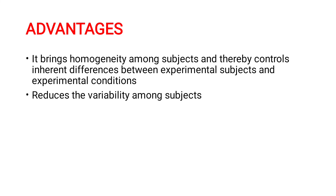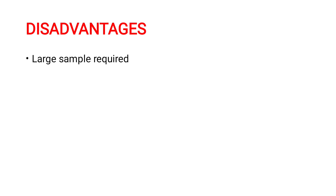For example, in Block 1 with only hypertension patients, you can clearly state the effect of a particular drug. For patients with diabetes and hypertension in Block 2, the same drug may have a different effect, allowing you to compare results and control inherent differences among experimental subjects and conditions. The disadvantage is that you need a very large sample size, and placing subjects in different blocks based on specific characteristics is very important.